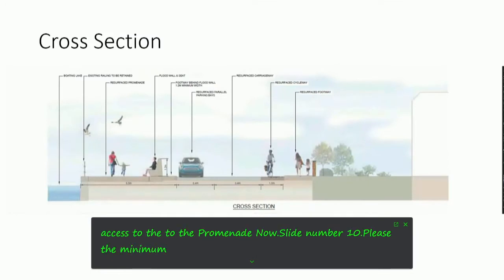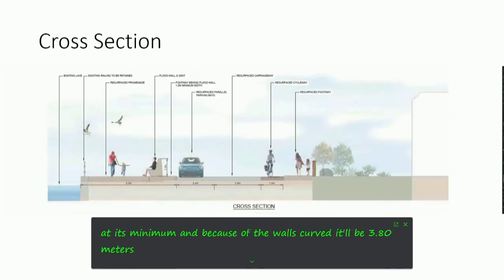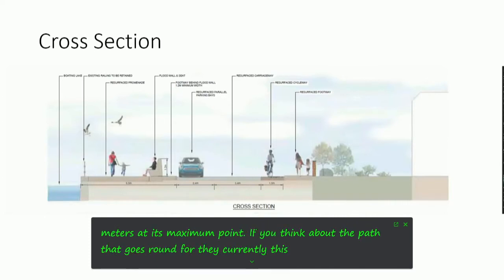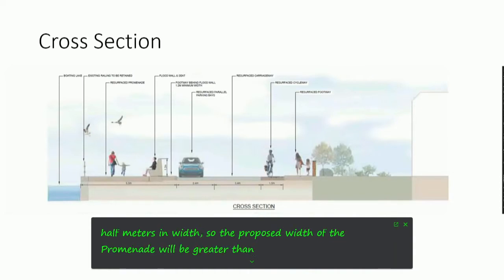The minimum width of the promenade will be 3.3 metres at its minimum, and because the wall is curved, it'll be 3.8 metres at its maximum point. If you think about the path that goes around the lake currently, this measures 2.5 metres in width, so the proposed width of the promenade will be greater than that.